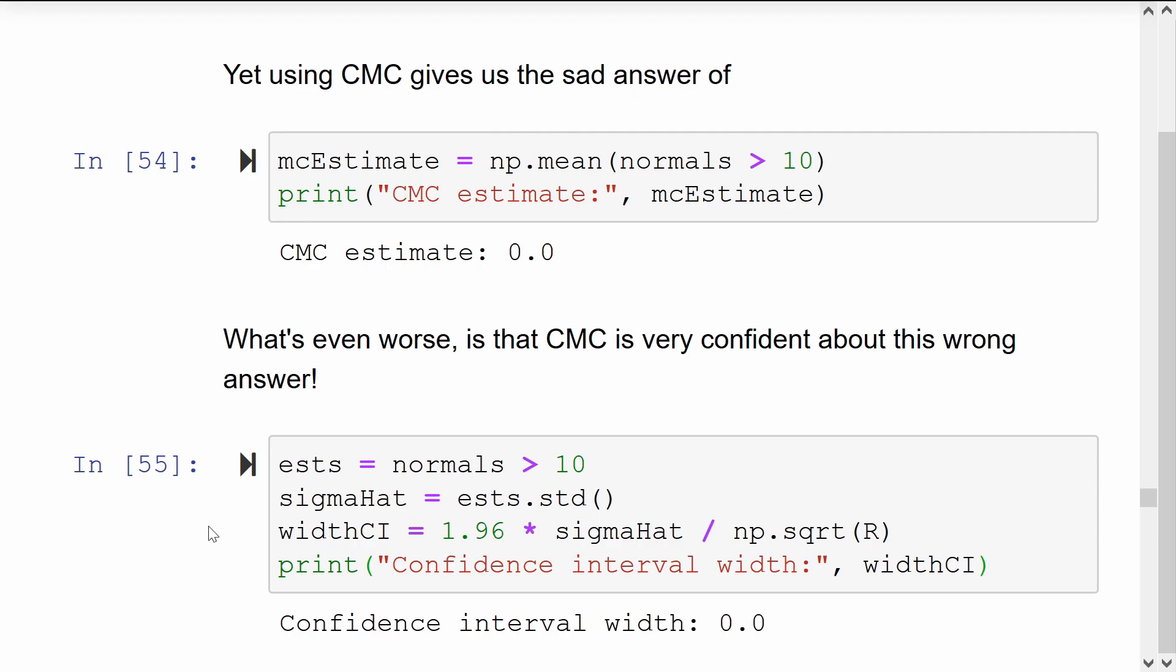The confidence intervals are based on the variance of our individual estimators. And if they're all consistently saying false, we didn't see this event of interest, then we have variance 0.